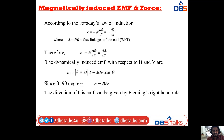Starting with magnetically induced EMF and force. According to Faraday's Law of Electromagnetic Induction, the induced EMF is e = -N dφ/dt. Writing Nφ as δ (flux linkages of the coil per turn), this becomes e = -dδ/dt, where δ = Nφ. Therefore, e = N dφ/dt = dδ/dt.